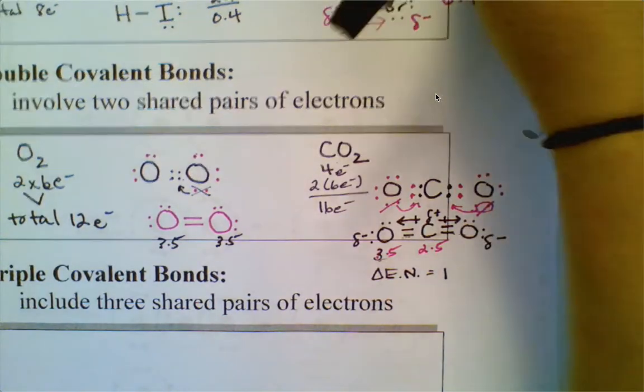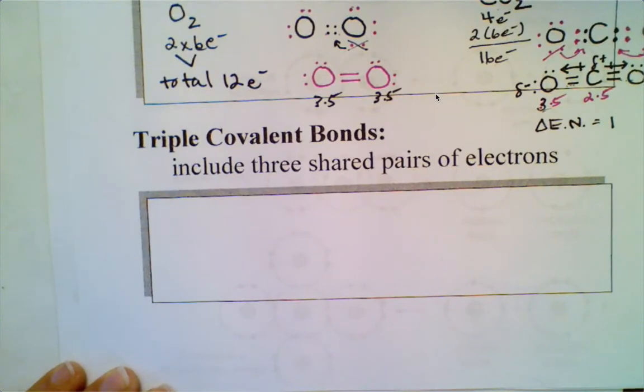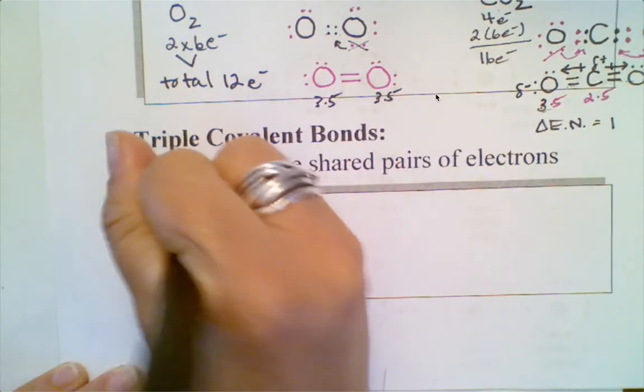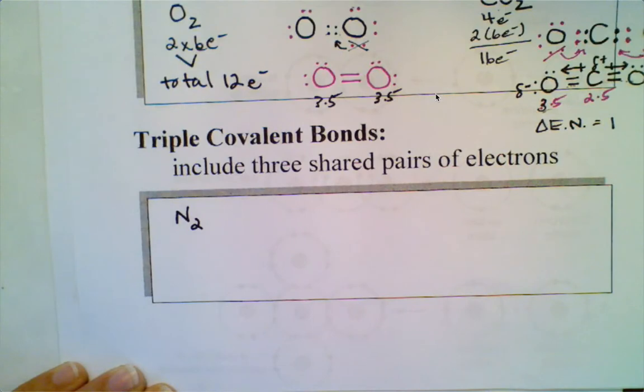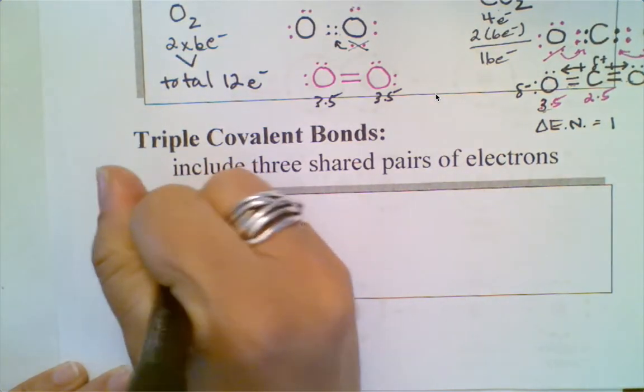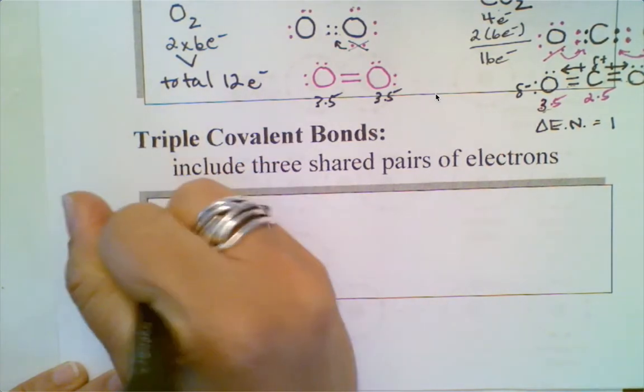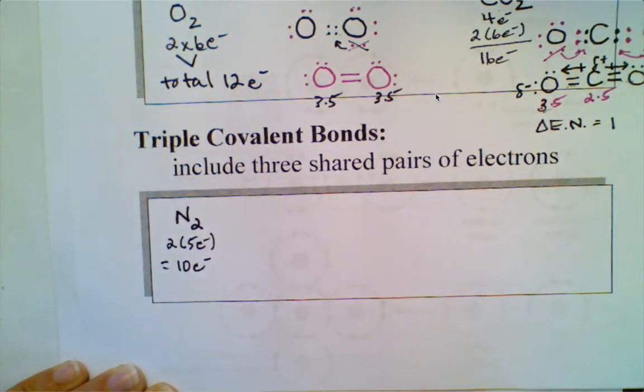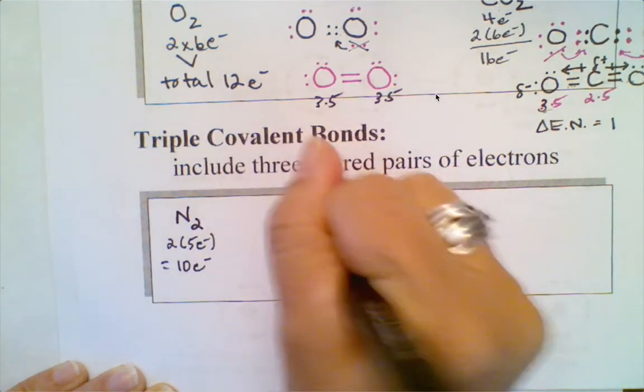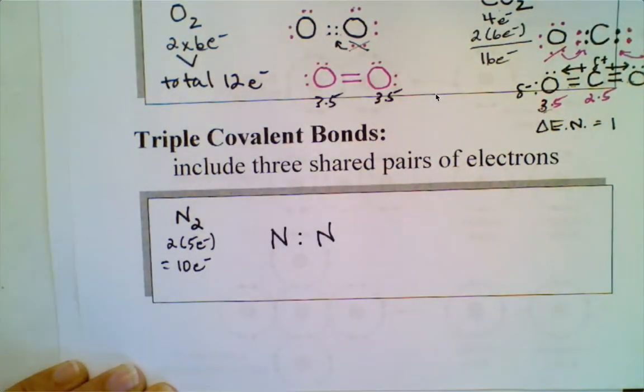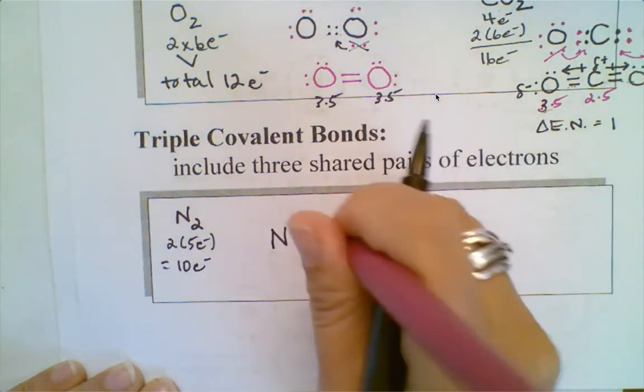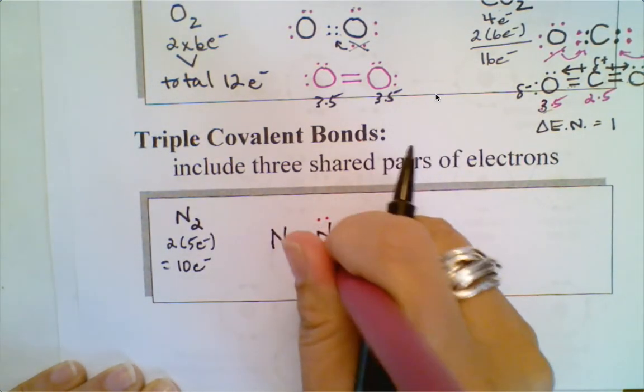Our last one is a triple covalent bond. Triple covalent bonds, as the title implies, create three links between atoms. If we take a look at diatomic nitrogen, each nitrogen has five valence electrons. So that means two times five electrons gives me a total of 10 electrons that I can work with.